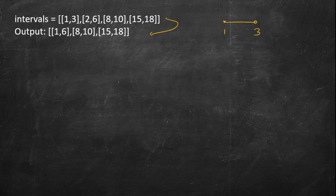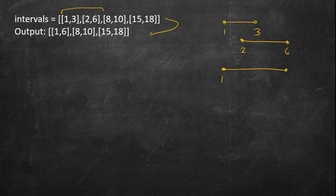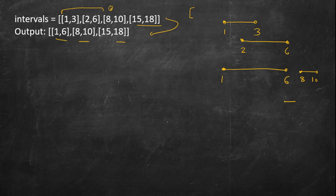The merged result: [1,3] starts at 1 and ends at 3; [2,6] starts before 3 and ends at 6, so these are overlapping. We merge them — minimum is 1, maximum is 6 — giving interval [1,6]. Then [8,10]: 8 is completely outside 6. This is a closed interval, so if 8 had been 6 we'd have merged it, but 8 is separate. [15,18] is also separate.